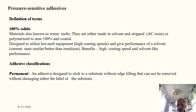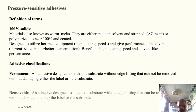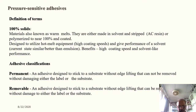Adhesive classification: a permanent adhesive is designed to stick to a substrate without edge lifting. A removable adhesive is also designed to stick to a substrate without edge lifting, but can be removed without damage to either the label or the substrate.